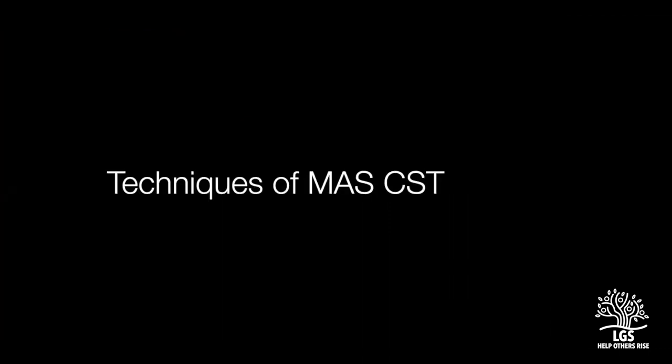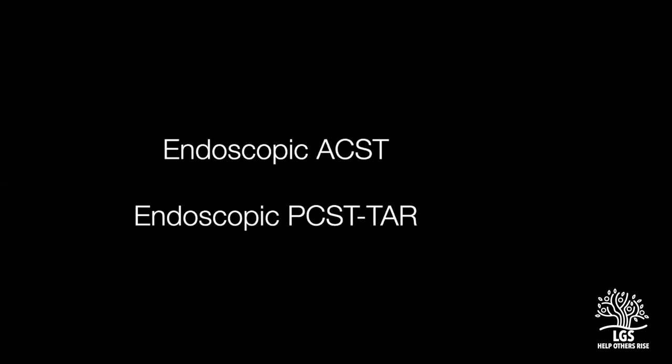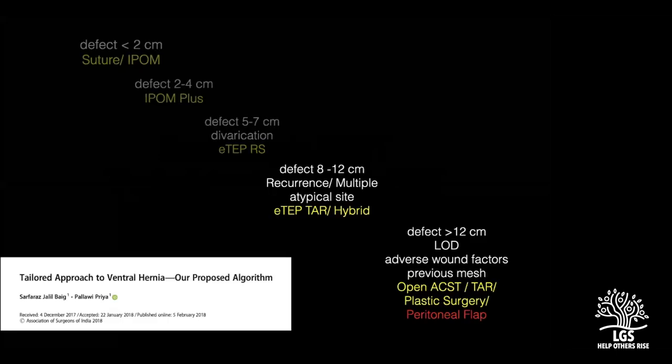Now let's move to the actual techniques of minimal access surgery for component separation. If asked 15 years ago whether large ventral hernias could be handled by minimal access, the answer would have been no. But now, with readily available techniques, it can be done. Our center published an algorithm in 2018 guiding when to use minimal access versus open component separation. When the defect size is between 8 to 12 centimeters, and the patient does not have redundant skin, a previous mesh, a previous sinus tract, or a poor scar needing refashioning, we would do it by endoscopic posterior component separation — endoscopic TAR (eTAP TAR).